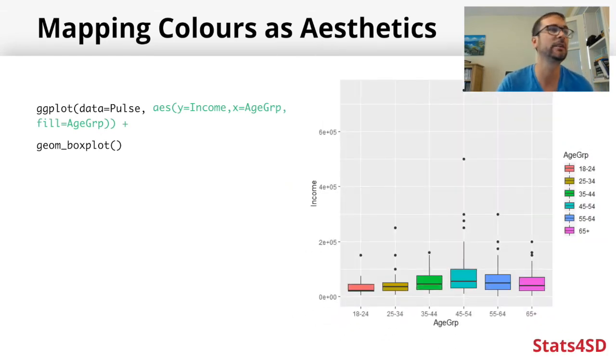Now we've got different colors for each of our different age groups. One of the really nice things about ggplot2 is you get pretty nice default color palettes that work nicely, and you also get a pretty nice default legend created automatically.